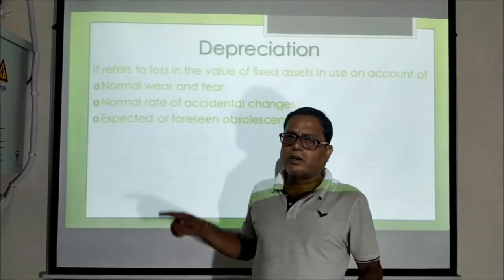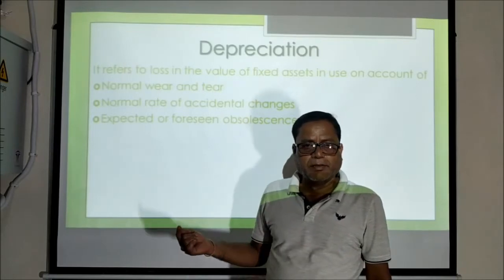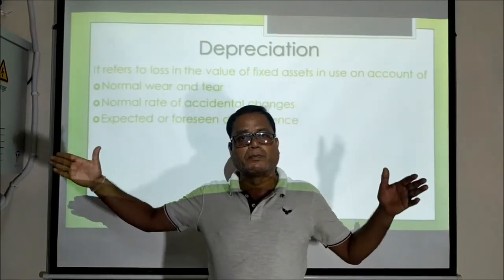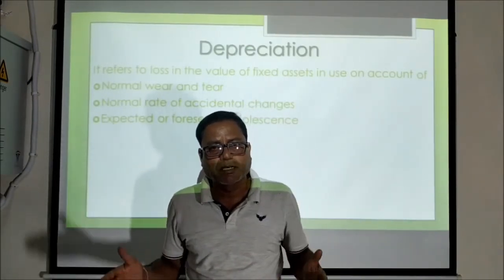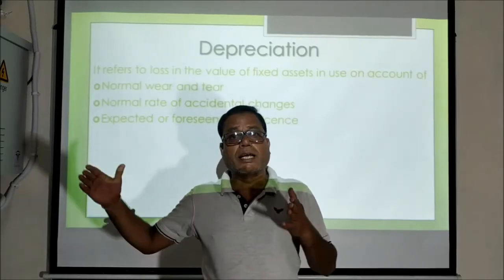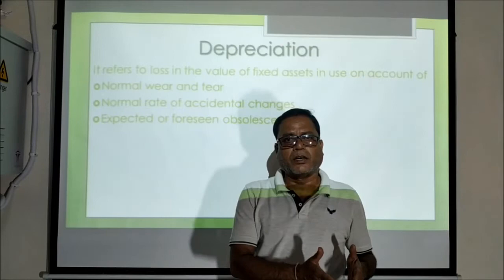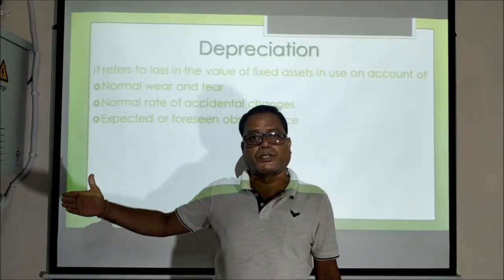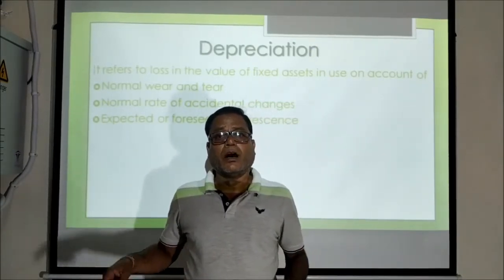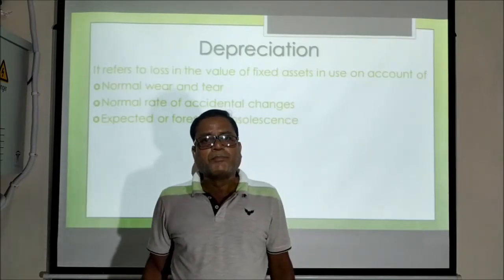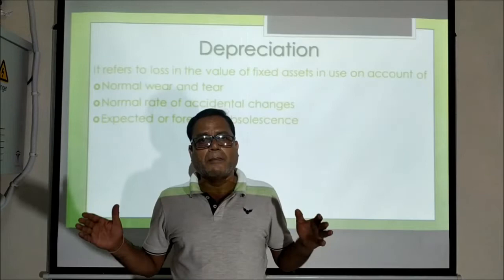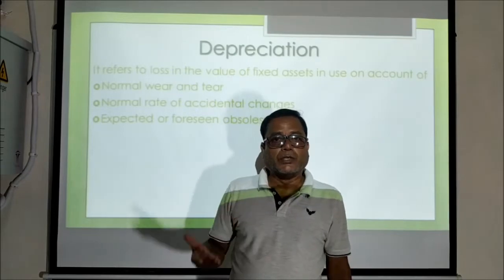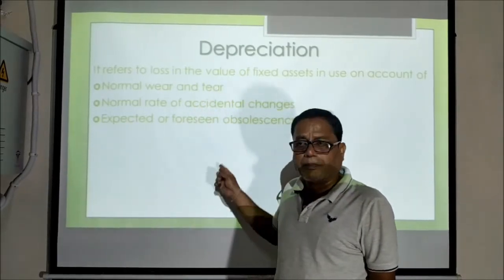When we invest in capital goods — say machinery — the value does not remain fixed for a long period of time. Suppose we purchase an ice cream making machine and plan to use it for 10 years. At the beginning when we purchased it, it cost 1000 rupees. After 10 years the value of that machine will not remain 1000 rupees — it will fall. The concept that describes the fall in value of capital goods over a period of use is depreciation.